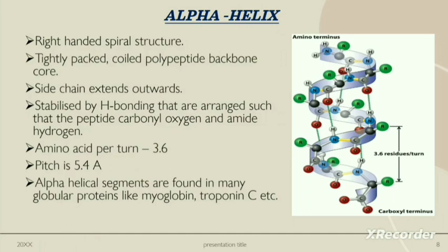Alpha helix: alpha helices are right-hand spiral structures. These are tightly packed coiled polypeptide backbone cores, with the side chains extending outward. These are stabilized by H-bonds between the carbonyl oxygen and amide hydrogen. The amino acids per turn is 3.6 and the pitch is 5.4 angstroms. Alpha helix segments are found in many globular proteins like myoglobin, chymotrypsin C, etc.